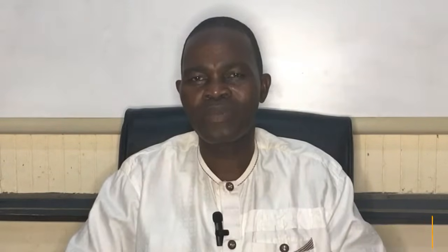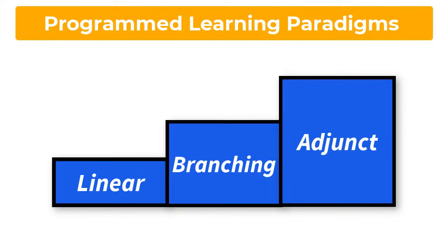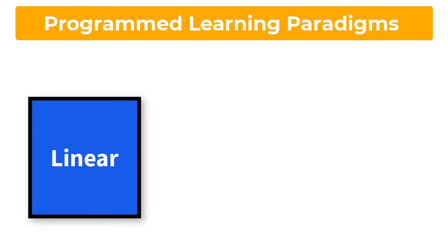We have three of them that we're going to be talking about: one, linear program; two, branching program; and three, adjunct program. Now we consider the linear program or extrinsic model, which we also call the Skinnerian program. This is named after B.F. Skinner.